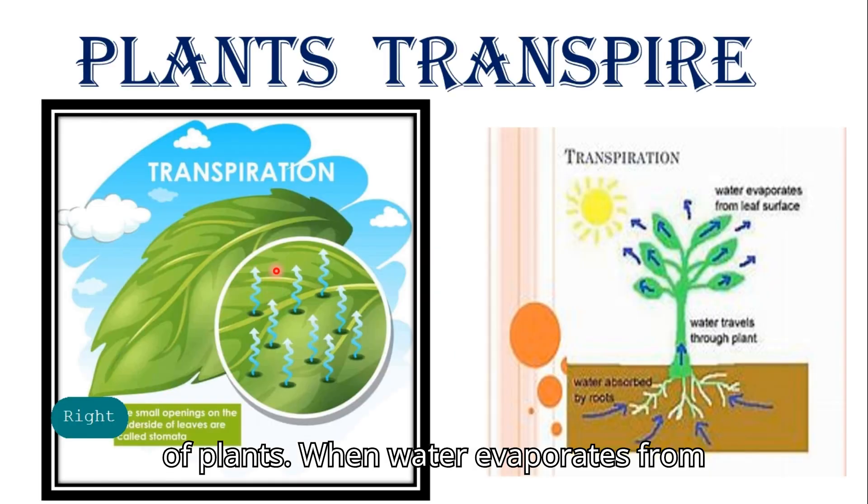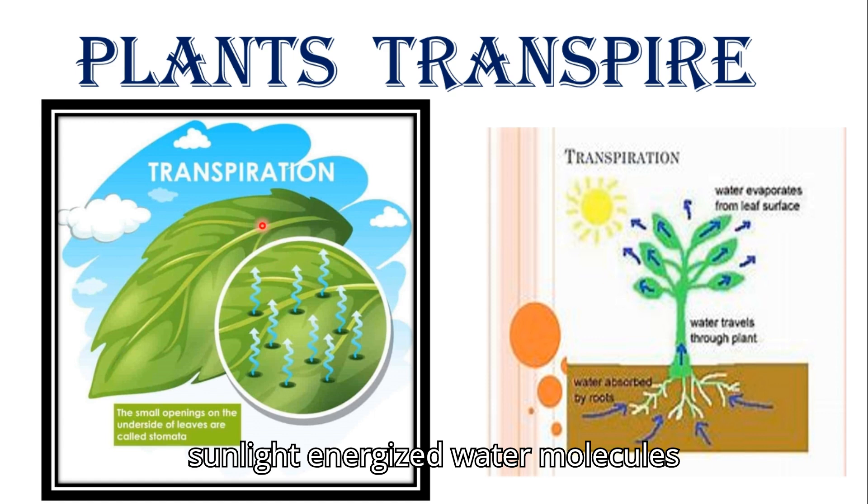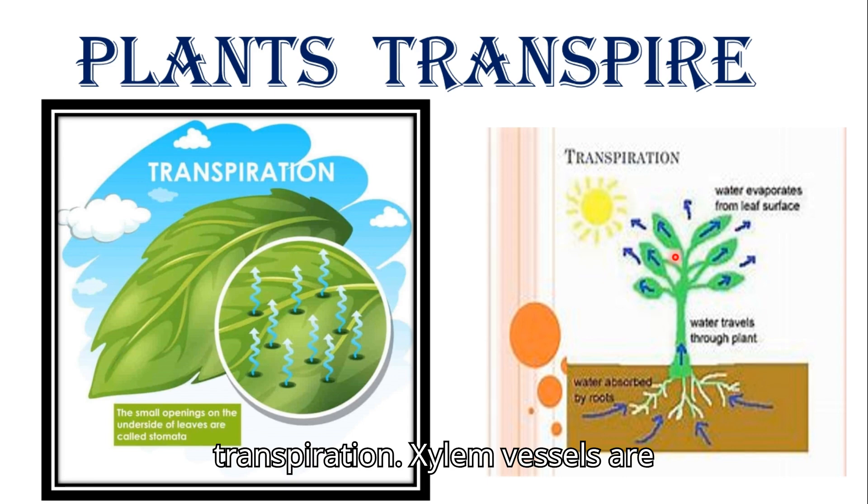When water evaporates from the surface of the leaves, this is transpiration. Transpiration happens when sunlight energizes water molecules which evaporate from plant surfaces, and then water moves upward from roots due to transpiration.